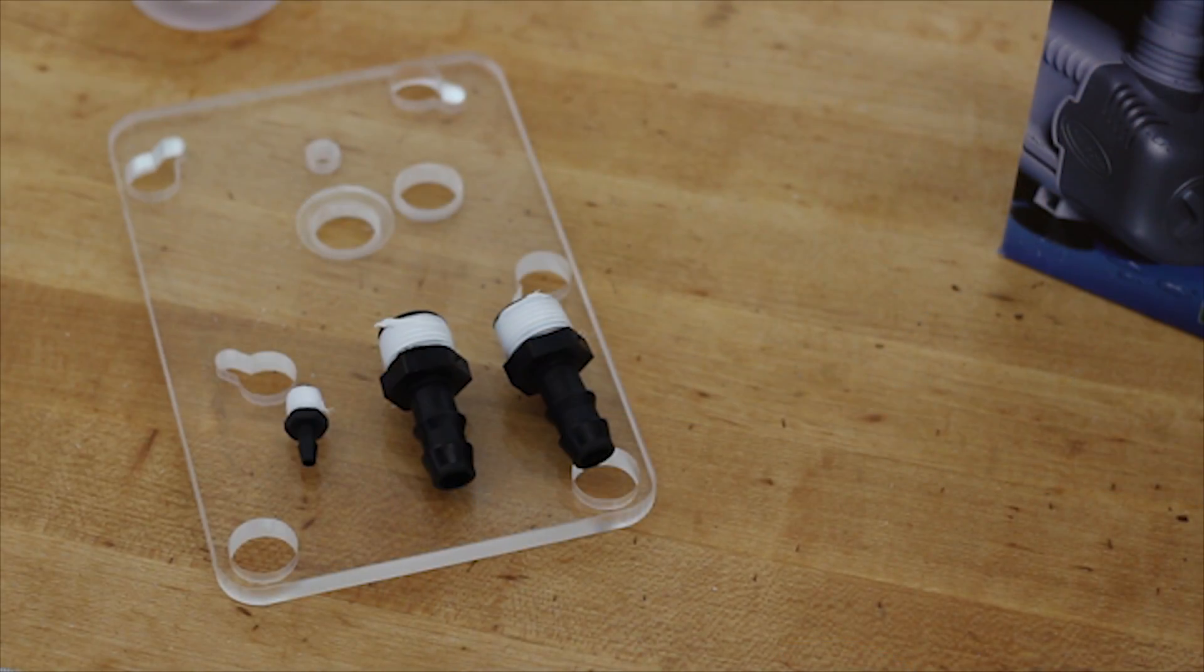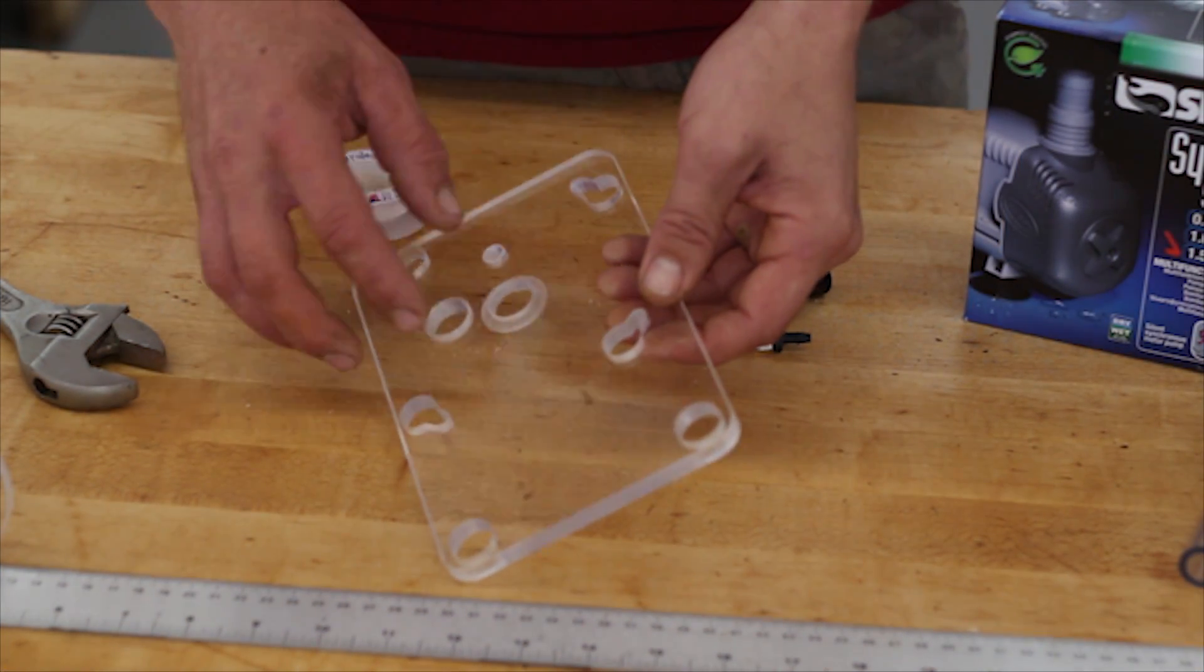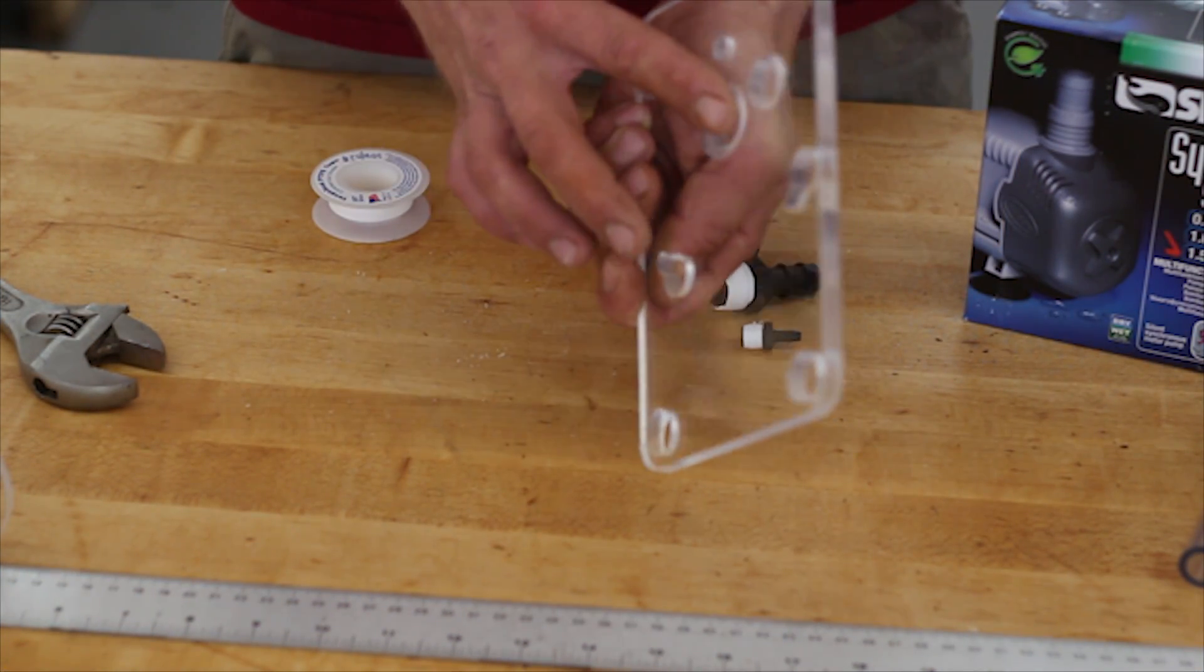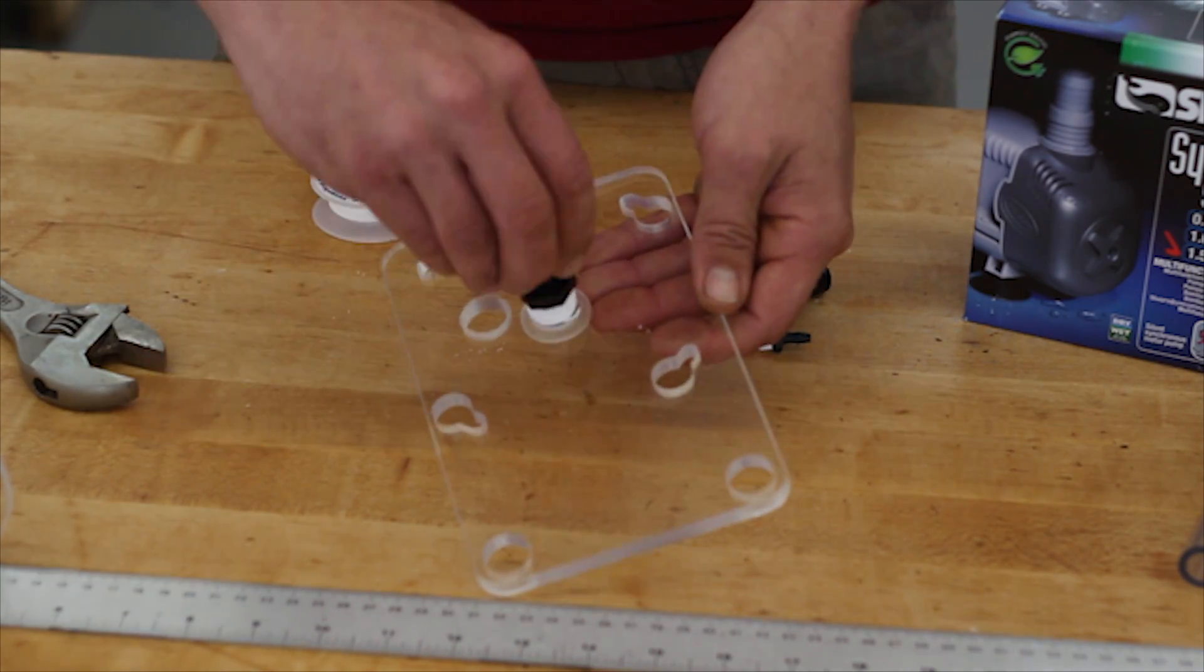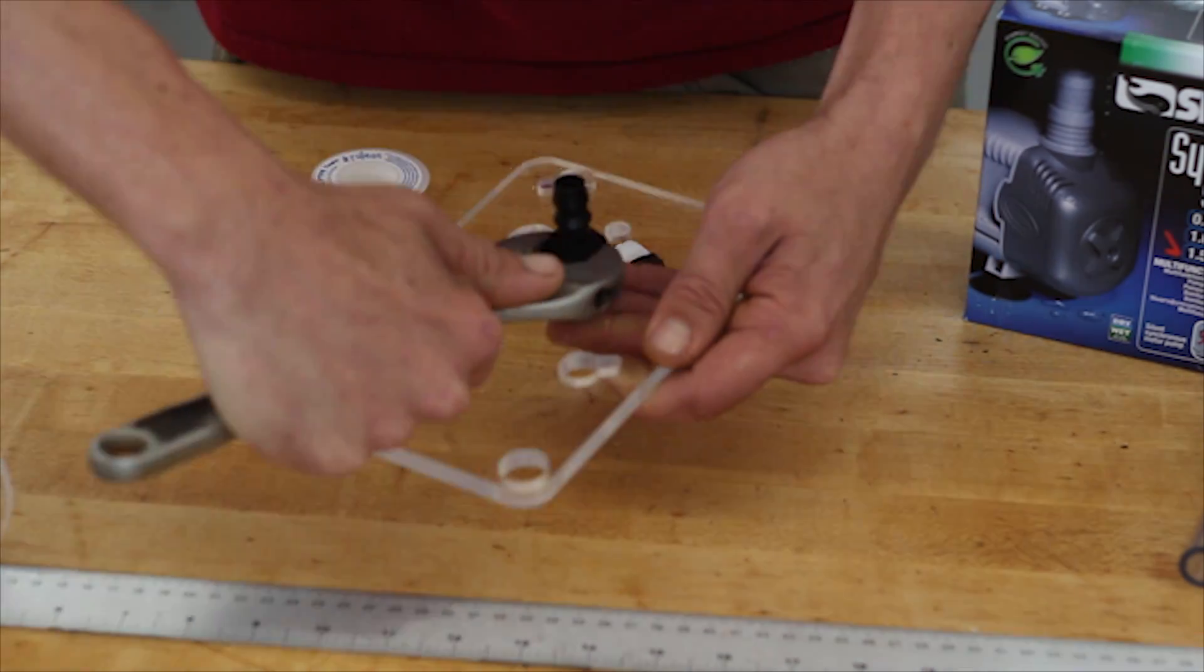Wrap your threaded fittings with Teflon tape. There's a groove in the lid, make sure it is facing down. Go ahead and screw in your threaded fittings so they are flush to the lid.